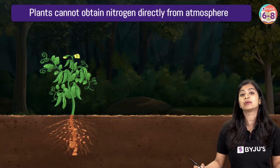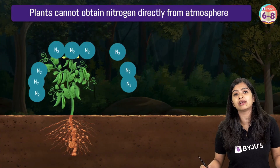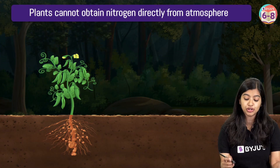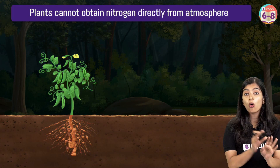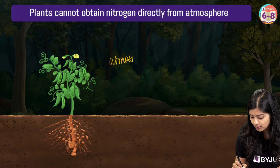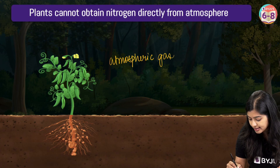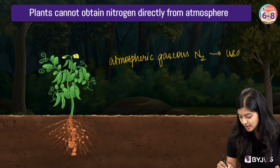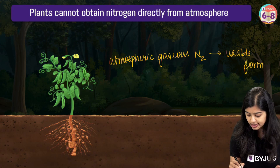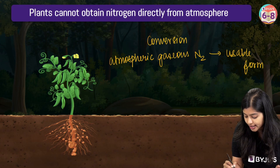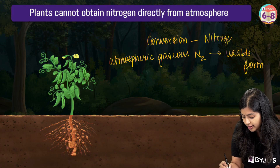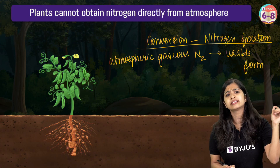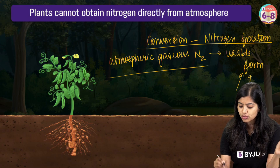Plants also cannot obtain nitrogen from the atmosphere, and there is a dire need for nitrogen to be converted into some usable forms. This whole process — wherein atmospheric gaseous nitrogen gets converted into a usable form — we call this the process of nitrogen fixation.